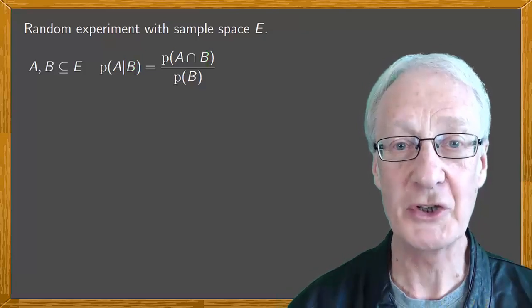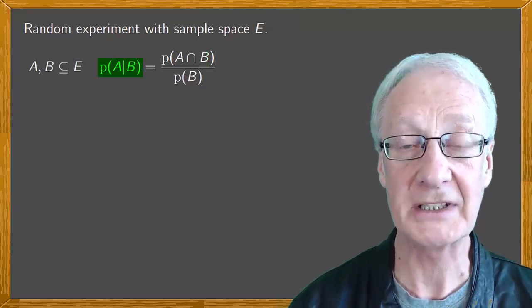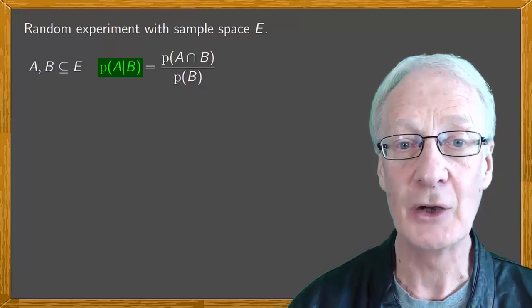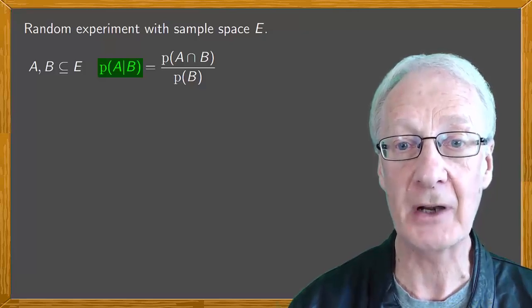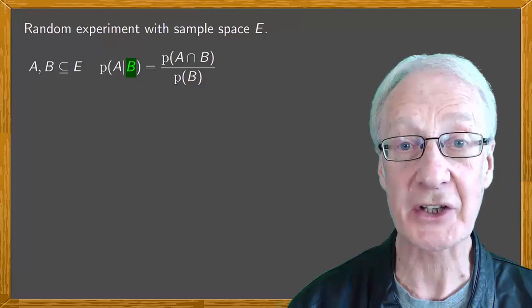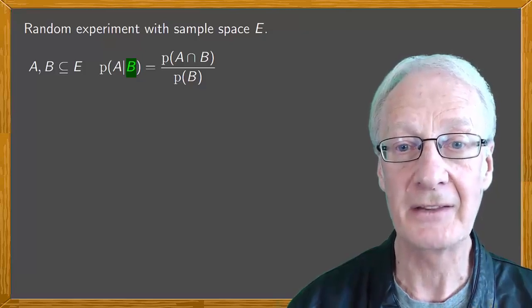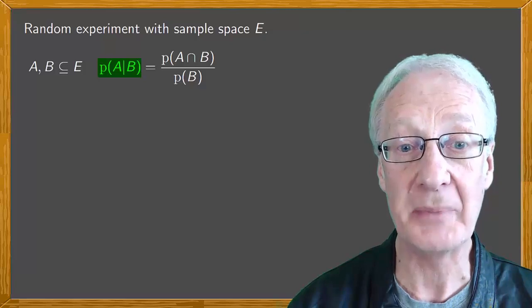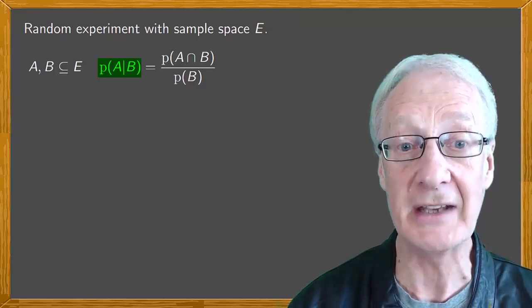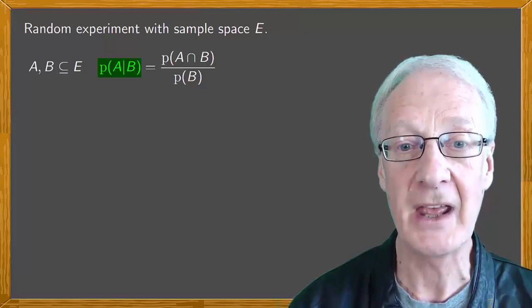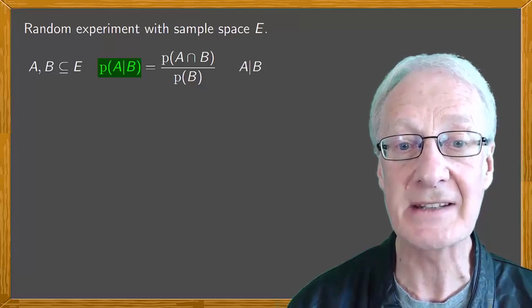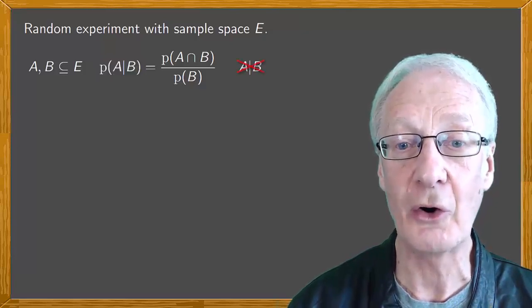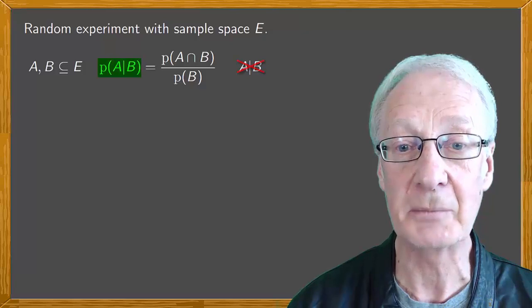It's important to note that when considering the probability of A conditional on B, we're changing the random experiment because since B has occurred, the new sample space is B. So the probability of A conditional on B isn't associated with an event in our random experiment. A conditional on B isn't considered by itself. Only that value is considered, the probability of A conditional on B.